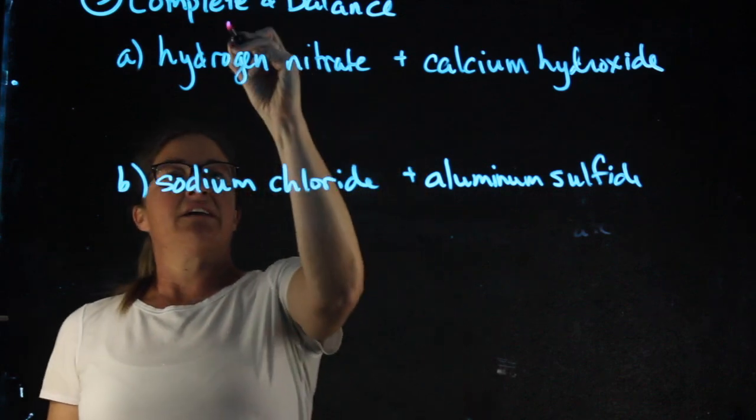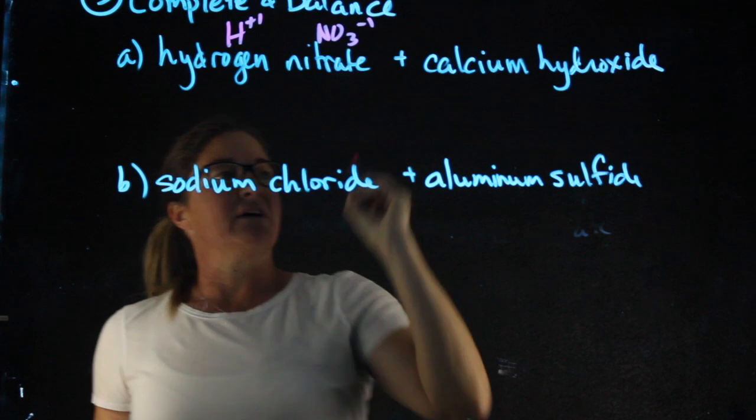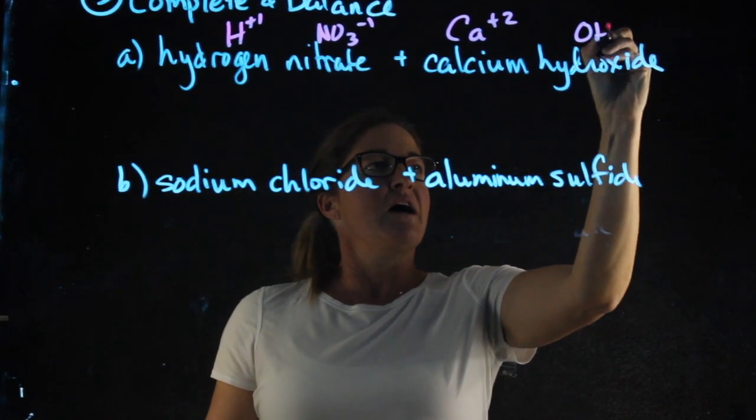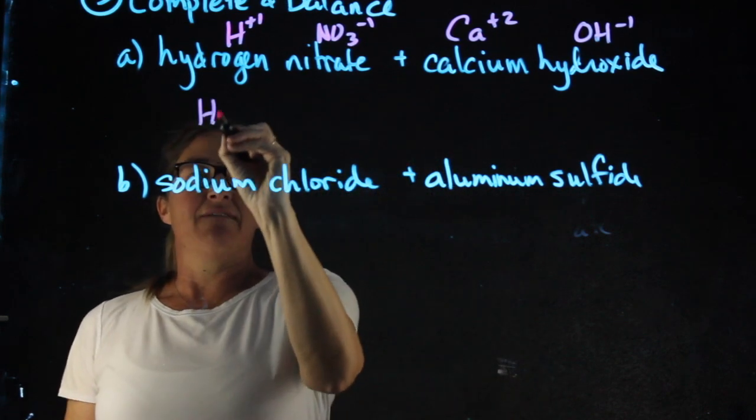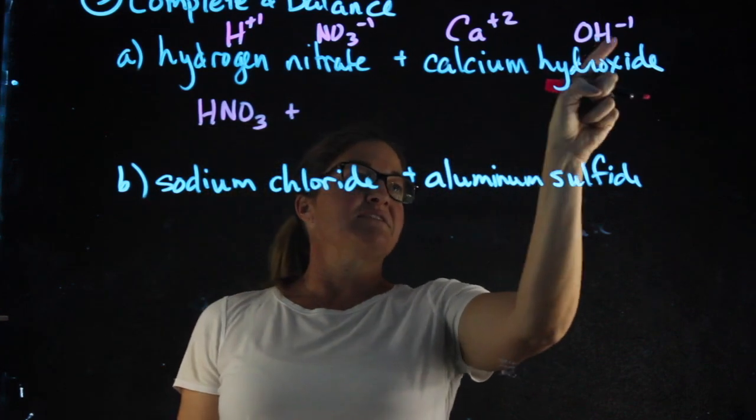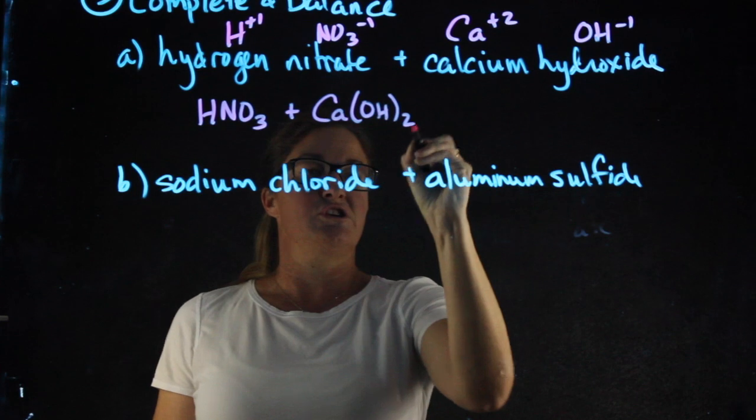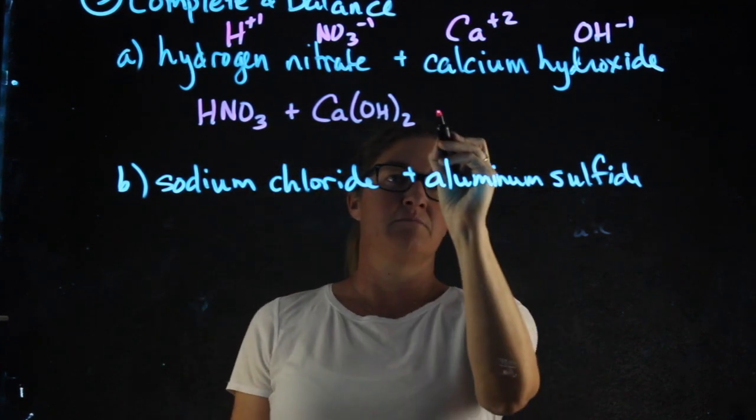Hydrogen nitrate: hydrogen is a plus one, nitrate's a minus one. Calcium hydroxide: calcium is a plus two, hydroxide's a minus one. So for my reactants, I will have HNO3 plus, for calcium hydroxide, I need to crisscross the charges, Ca(OH)2, making sure I have parentheses around the OH because I have more than one of the polyatomic ion.